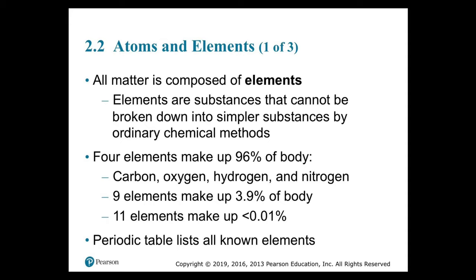Nine elements make up 3.9% of the body: calcium, phosphorus, potassium, sulfur, sodium, chlorine, magnesium, iodine, and iron. Eleven elements make up less than 0.01% of the body — they're found in trace amounts. Examples include chromium, cobalt, copper, fluorine, manganese, selenium, silicon, and zinc.